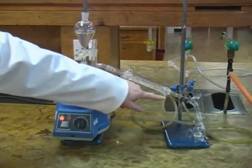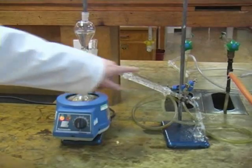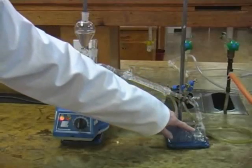Here we have a condenser with water running from bottom to top, and after the condenser we have a receiver running into a conical flask.